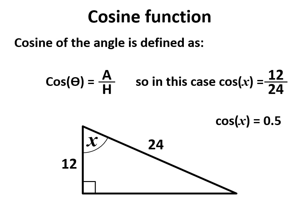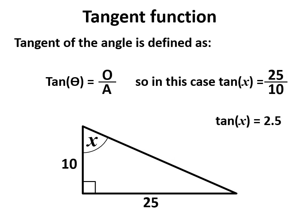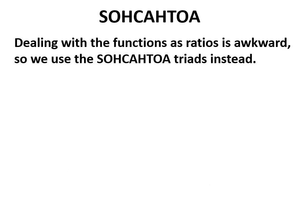Cosine works the same way except it uses adjacent and hypotenuse, and tangent similarly uses opposite and hypotenuse. We can calculate the values of the tangent function using two sides, however that's pretty awkward, and so we don't generally use the ratios like that.